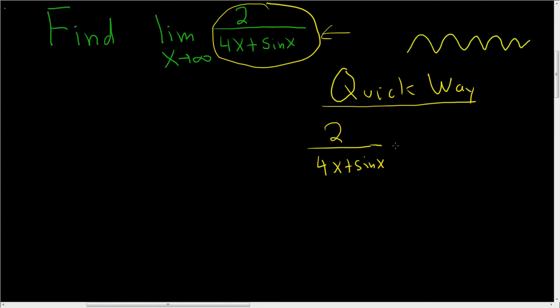It's trapped between negative 1 and 1, so it's pretty insignificant. This is really just 2 over 4x, and as x approaches infinity, this approaches 0.